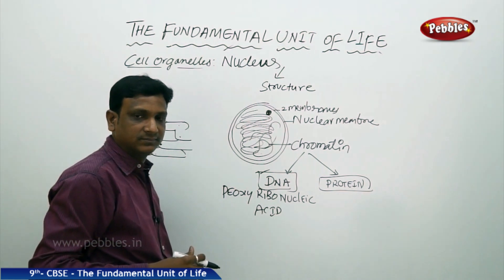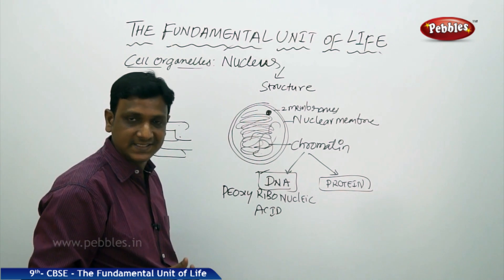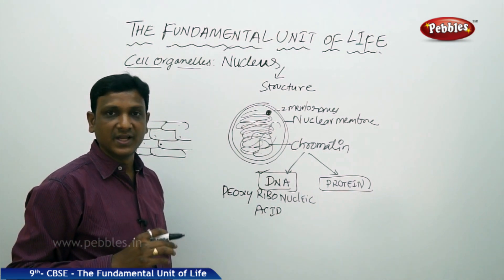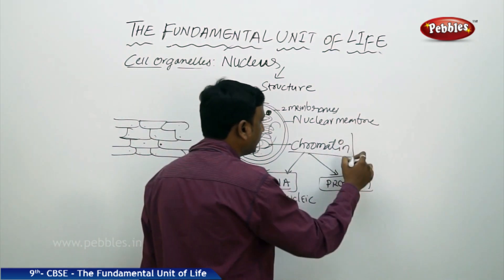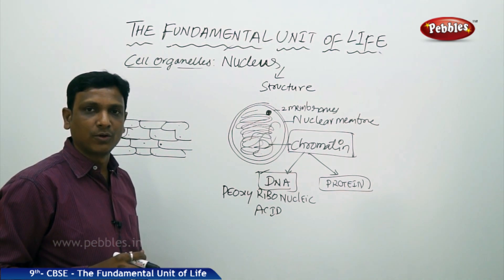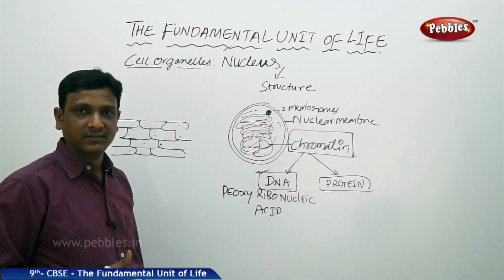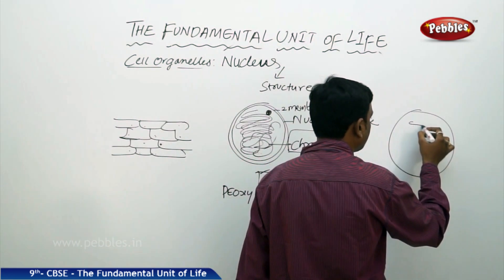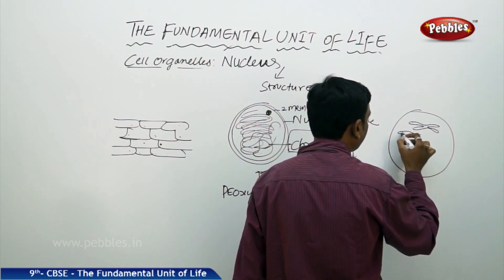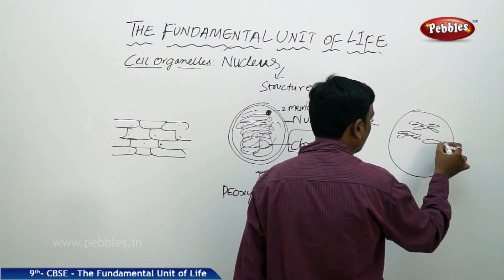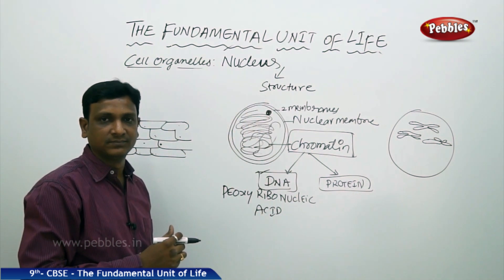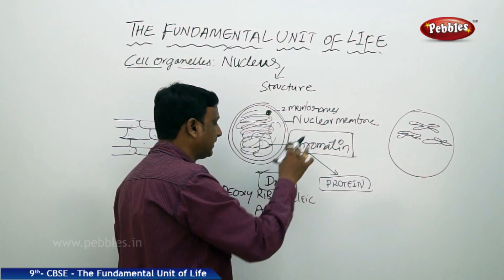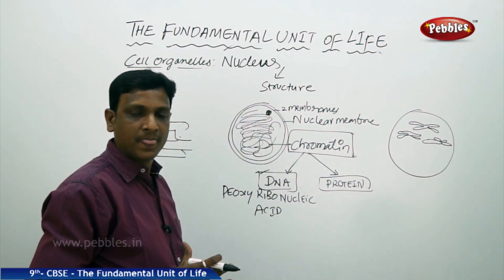Now, what is the relation between chromatin and chromatids, which we studied in the lesson on cell division — mitosis and meiosis? When a cell is not dividing, the genetic material exists as chromatin — an entangled thread-like mass. But when the cell is about to divide or is in the phase of cell division, the chromatin takes the form of chromosomes, which are rod-like structures. So whether it is a chromosome or chromatin, it consists of DNA and protein, and DNA is the genetic material.